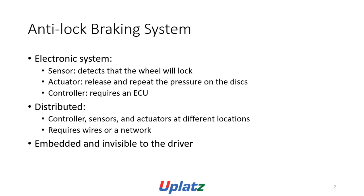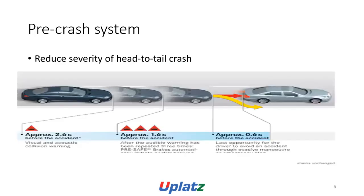Anti-lock braking system is an electronic system with sensors that detect wheel lock when activated. The ECU controls it, acting as a distributed controller. Sensors and communication require wires or a network embedded and invisible to the driver.